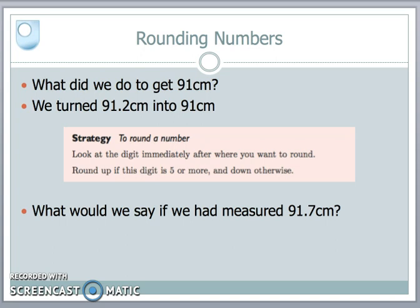But if my child had been measured at 91.7, I would apply the strategy again and might actually say, the seven is bigger than five, and so therefore on this occasion, I'm going to round up to 92 centimeters. Because in conveying this height to somebody else, I've taken the decision that just two significant numbers are good enough to convey a meaningful answer.